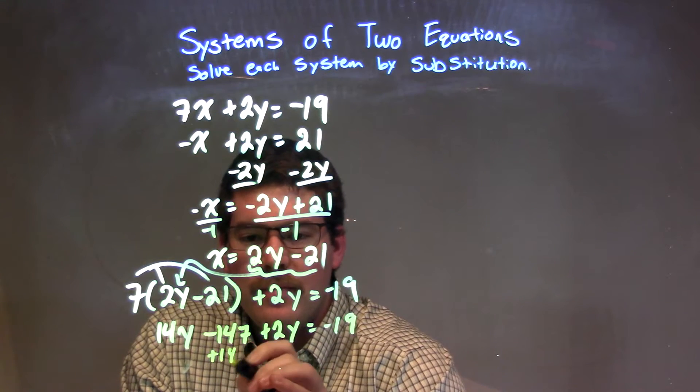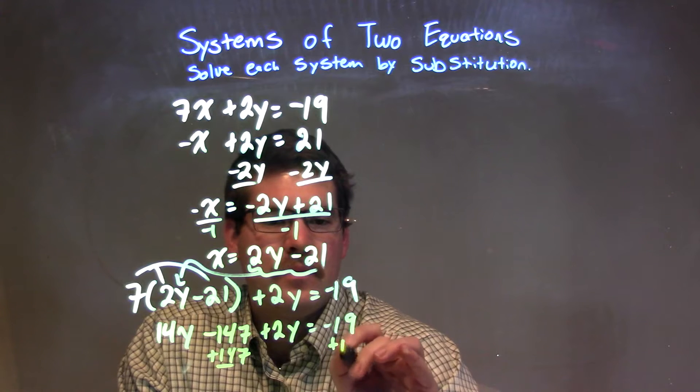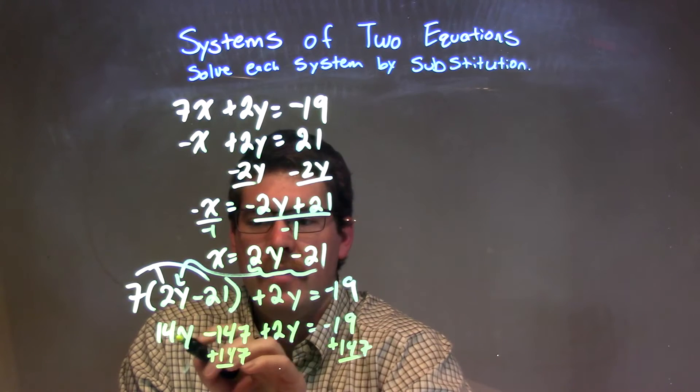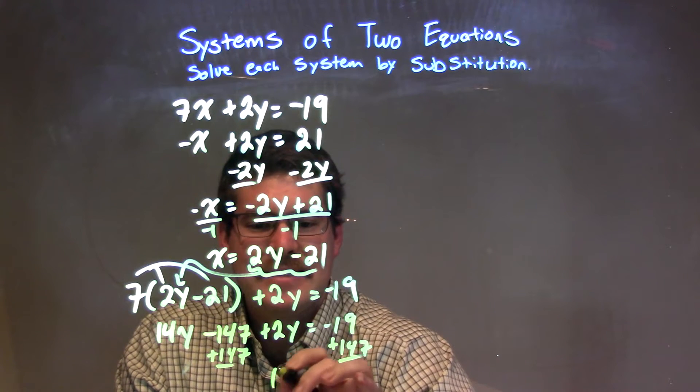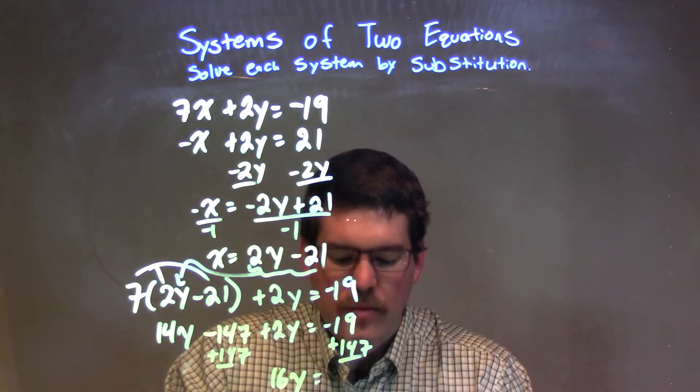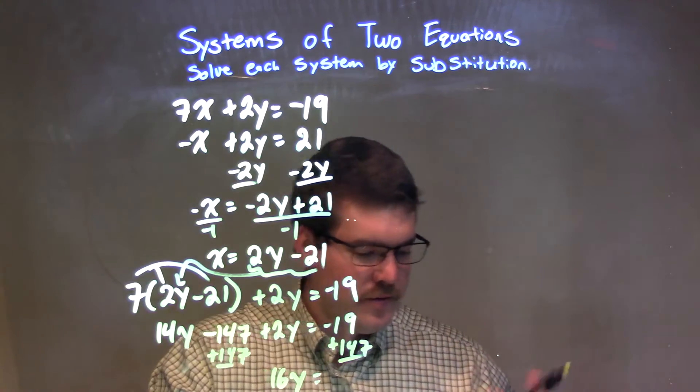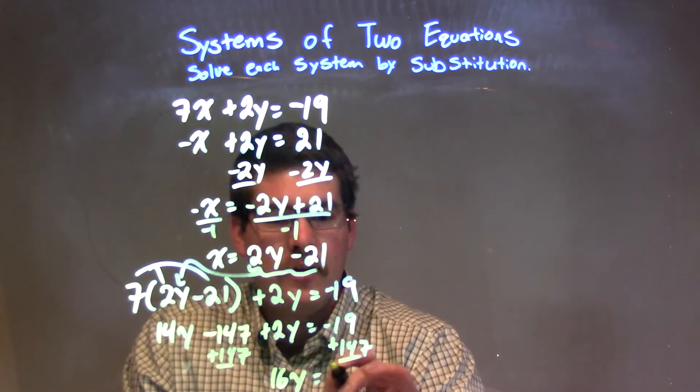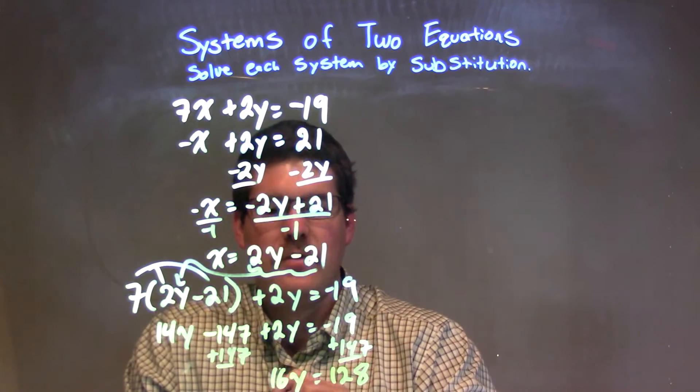I'm going to add 147 to both sides, and I'm going to combine the 14y and 2y to be 16y equals negative 19 plus 147. I don't know why I'm using a calculator. That's stupid. All right, don't do that, Sean. That's a positive 128.